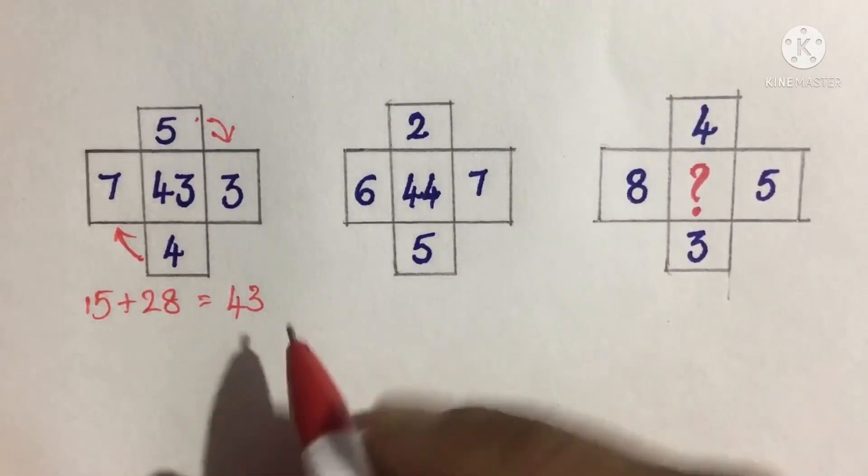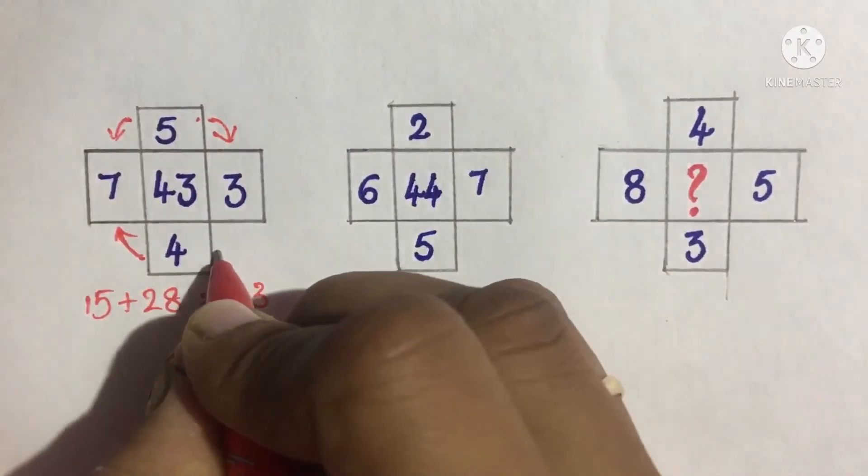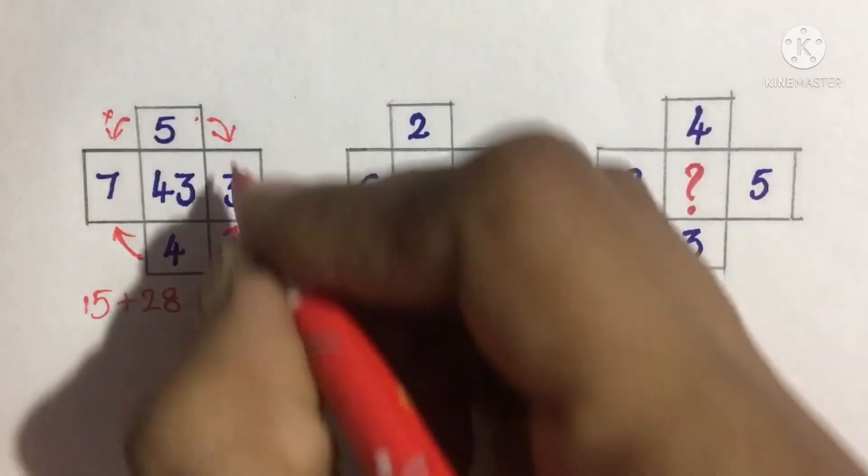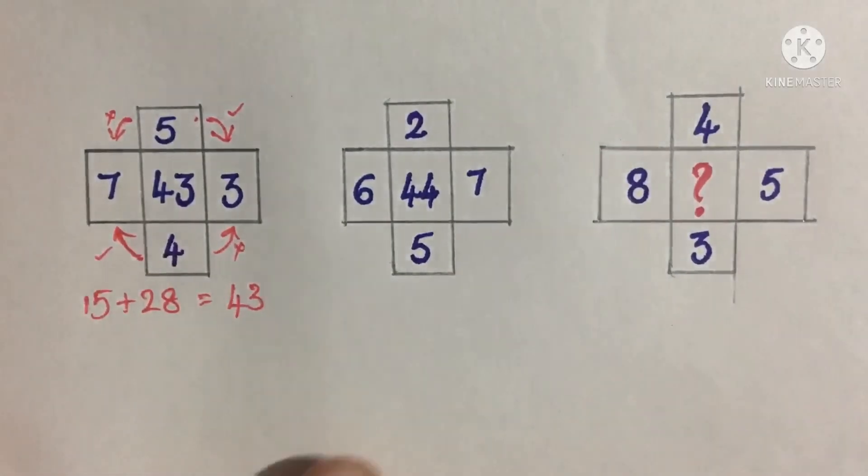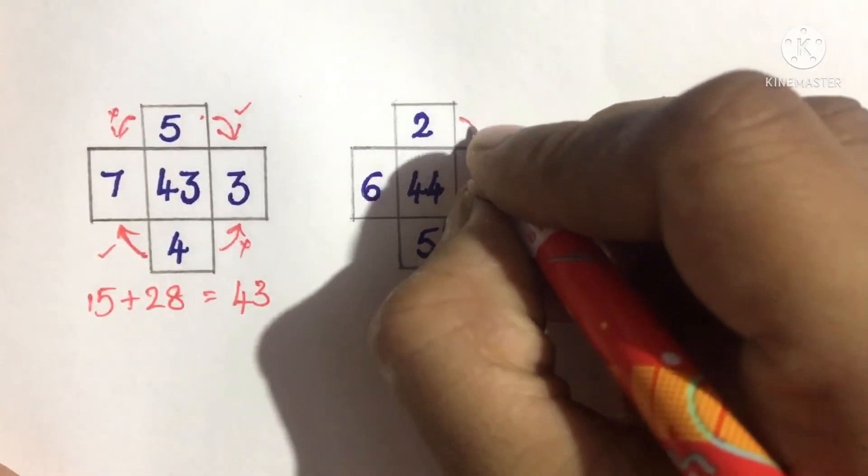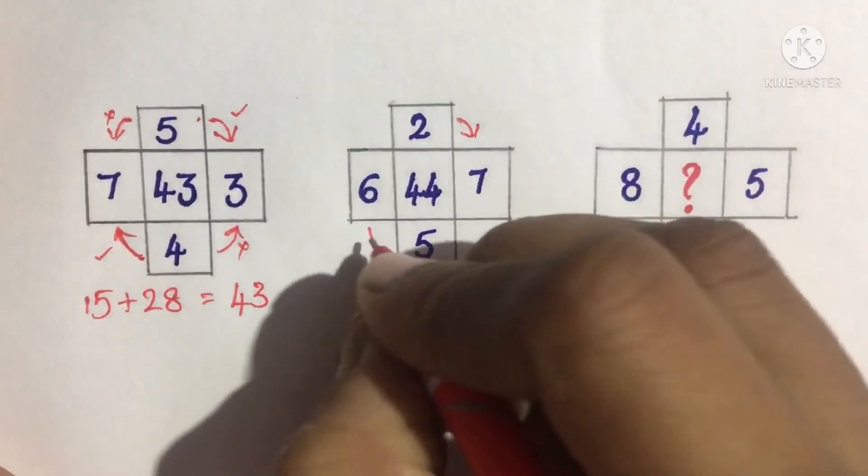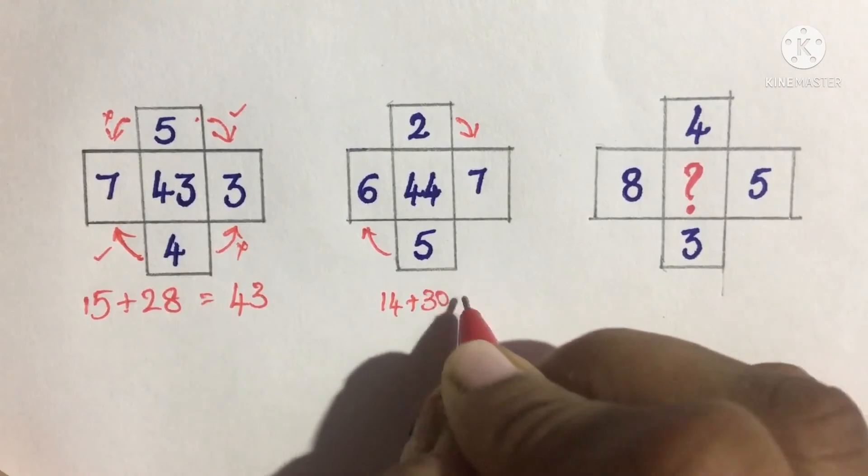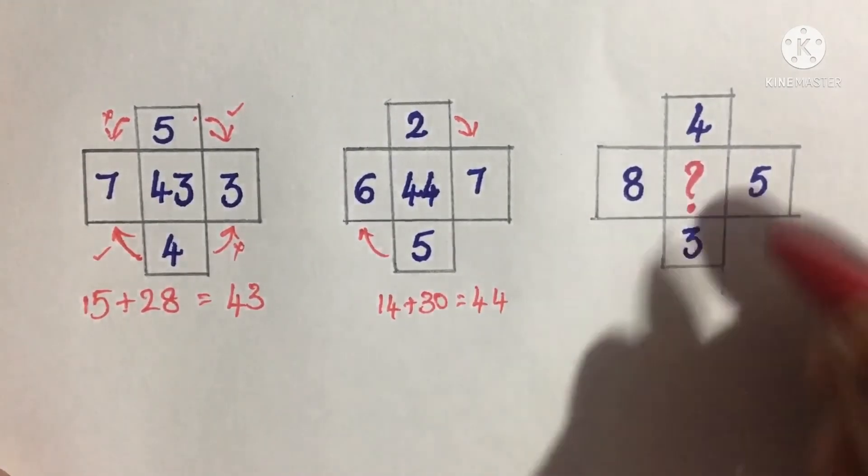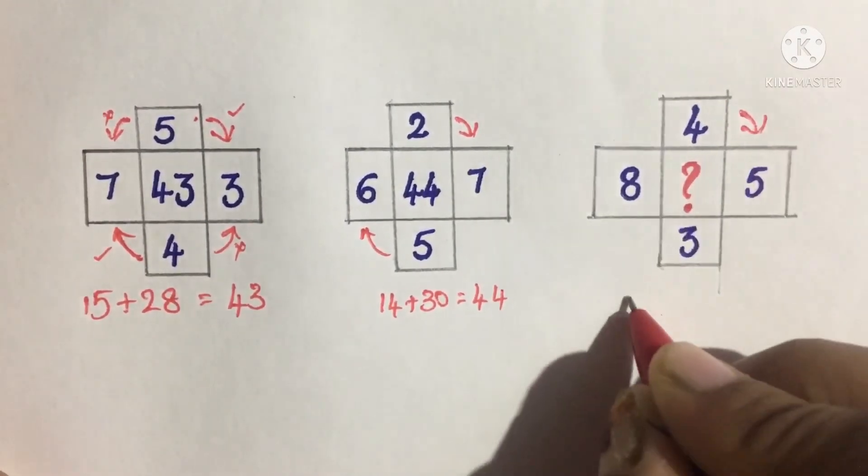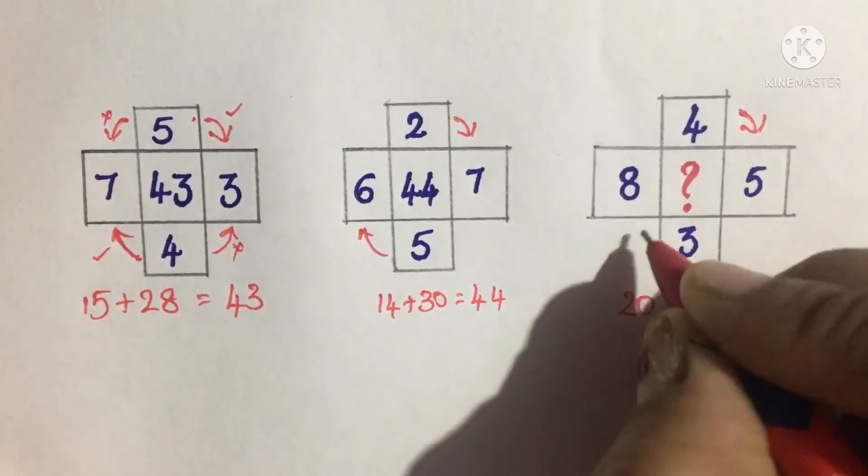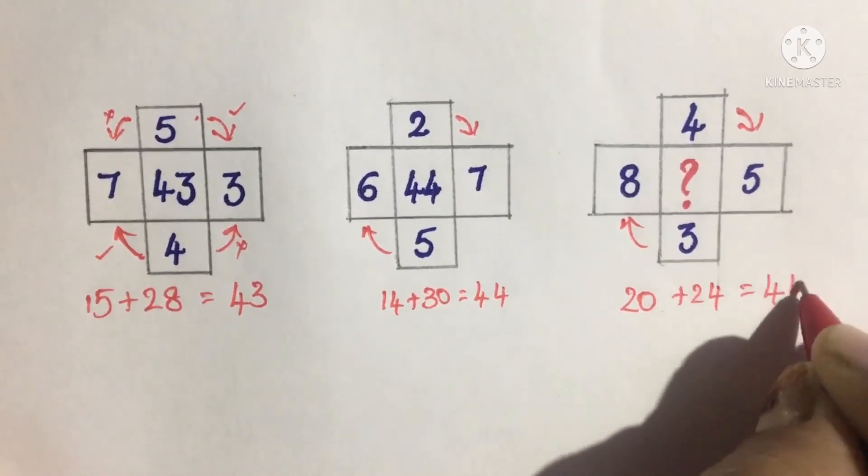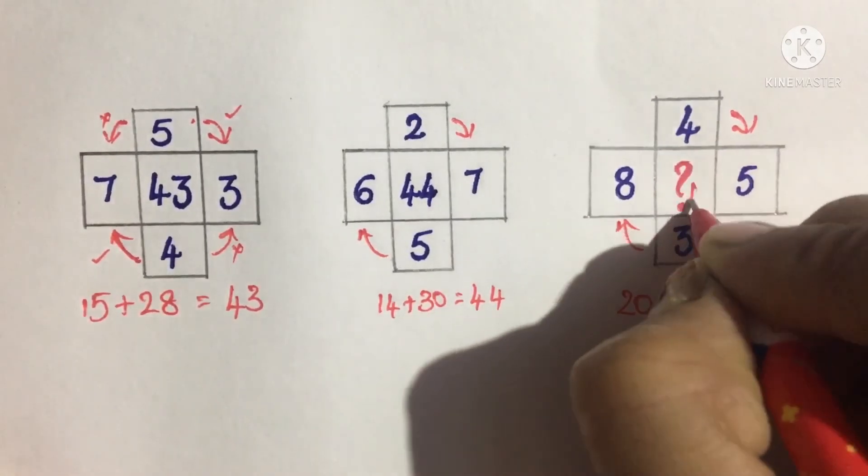Following the same trick, sometimes it could be these two or those two, but this is the correct one. So 7 times 2 is 14, plus 6 times 5 is 30. 14 plus 30 equals 44. Also, 4 times 5 is 20, plus 8 times 3 is 24, which equals 44. So 44 is our answer.